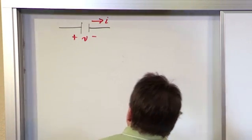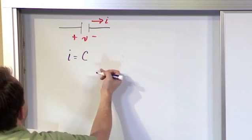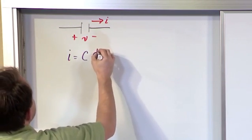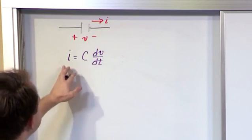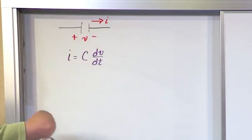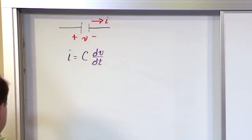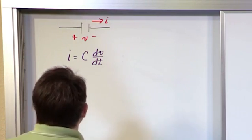Now we have already established in the last section that the current flowing through this capacitor is a capacitance C times dv dt. So this is the current flowing through the capacitor if we know how the voltage is behaving. What we want to do is turn it around and solve for the voltage, and so what we're going to do is that right now.